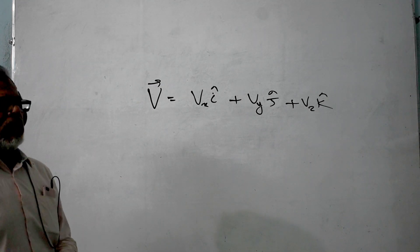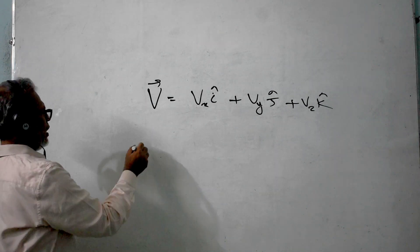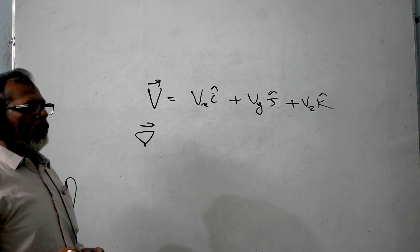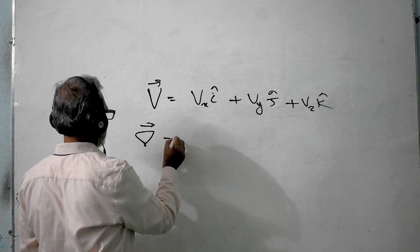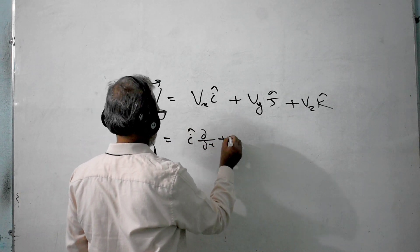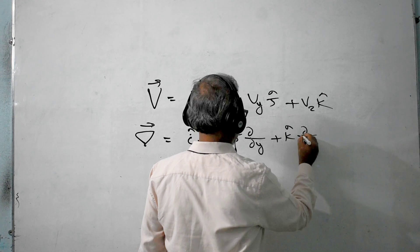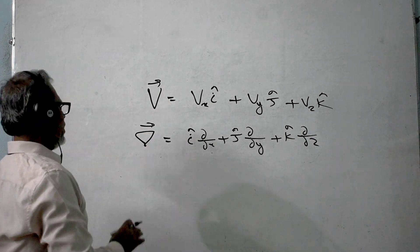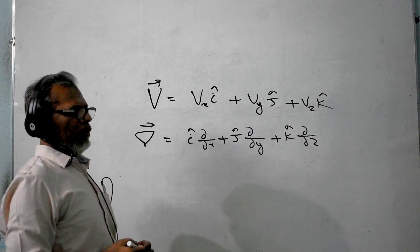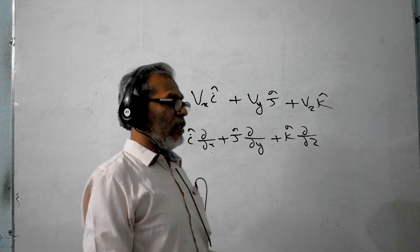In addition to this, there is a very important symbol in mathematics and mathematical physics, and that is the del operator. This is called the del operator, also called the nabla operator. It is expanded like this: i·(∂/∂x) plus j·(∂/∂y) plus k·(∂/∂z). This is a very very important operator when we go into the details of mathematical physics.